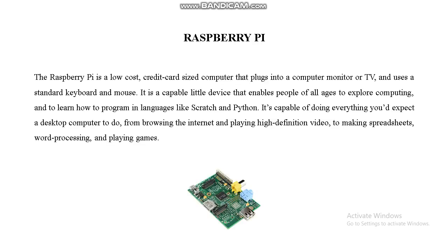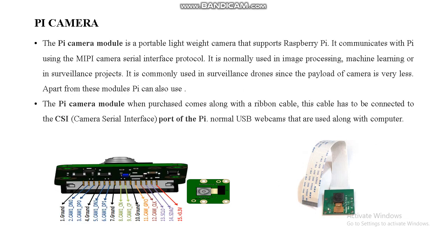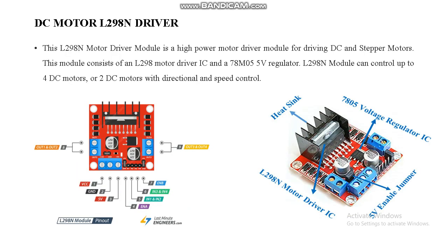We can use either Raspberry Pi 3B Plus or 4B versions in our system. The Pi camera is also a key component used for capturing object images.